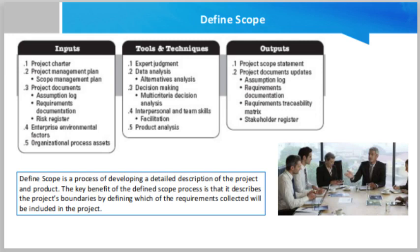The outputs of the Define Scope process include the project scope statement. A project scope statement is a detailed description of the project scope which includes significant deliverables, assumptions, and constraints. It documents both the project scope and the product scope, and describes the project deliverables and the work required to deliver them. Based on the level and degree of detail, the project scope statement defines the work that will be performed.